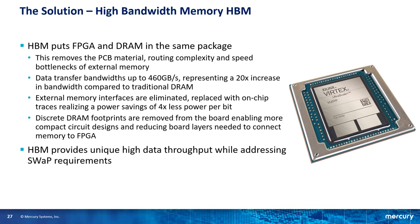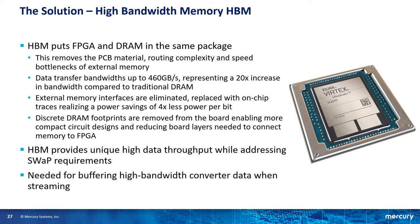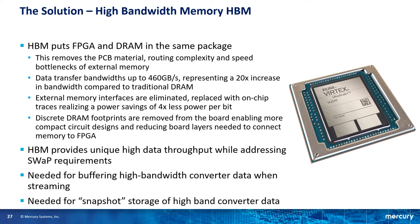HBM provides unique high data throughput while addressing size and power requirements. For our data converter example, it's needed for buffering high bandwidth converter data when streaming, or for snapshot storage where a time slice of data gets stored at full sample rate and then either gets processed or offloaded at a slower rate.